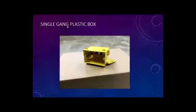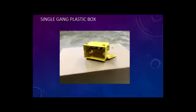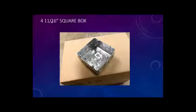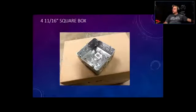All right, so this is a single gang plastic box. Now this is an example of a four by one and eleven-sixteenths – which is basically almost one inch deep. Remember, the last dimension is the depth of the box. Because it's a square box we only need to give one side dimension, since we know if it's square it's square.